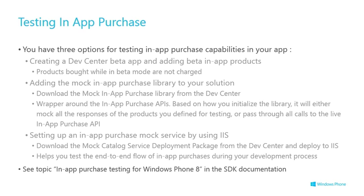This simple mock library is designed to make it easier to work with in-app purchase without needing to set up your own back-end services. It's a thin wrapper around the in-app purchase APIs. Based on how you initialize this library, it will either mock all the responses to the in-app purchase system or pass all the calls through to the real back-end system. In debug mode, you can be testing against the mocks, and in release mode it's live and hitting the real back-end system. The library is designed to mimic the way in-app purchase works.